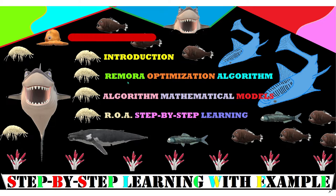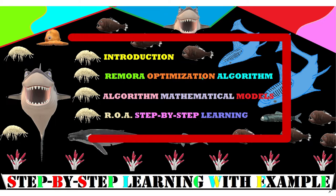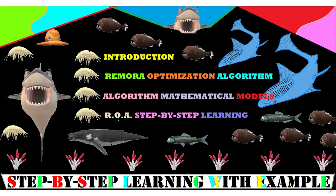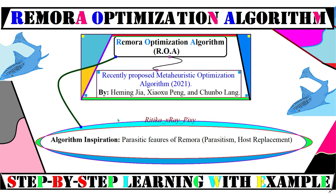Next, we will try to understand what this algorithm is all about and how it is working. Then we have different mathematical models used in this algorithm for position update, prey searching, host feeding, attack, and other activities. In the end, we will try to understand how this algorithm is working step by step with an example.